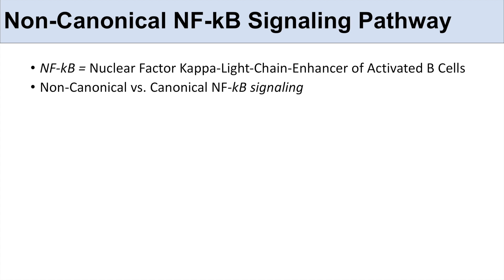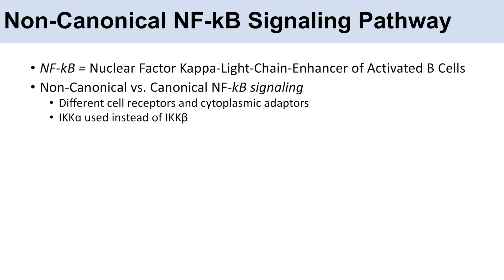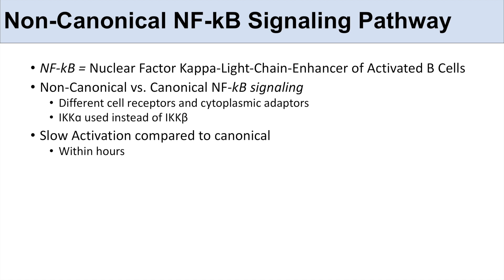What are some of the differences between the non-canonical versus the canonical NF-kappa-B signaling pathway? They differ in their cell receptor and cytoplasmic adapters. One key difference is that IKK-alpha is used in the non-canonical pathway, as opposed to IKK-beta which is used in the canonical pathway. Another big difference is that the non-canonical pathway has a slower activation — it actually takes hours for this pathway to become active.